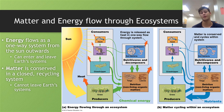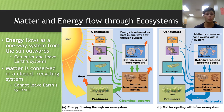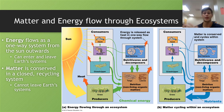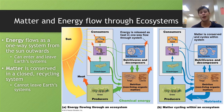Matter and energy flow through ecosystems. Energy flows as a one-way system from the sun outwards — energy can enter the Earth from the sun and then leave the planet as a one-way flow. However, matter is conserved in a closed or recycling system; matter is recycled over and over again and can't actually leave the planet.